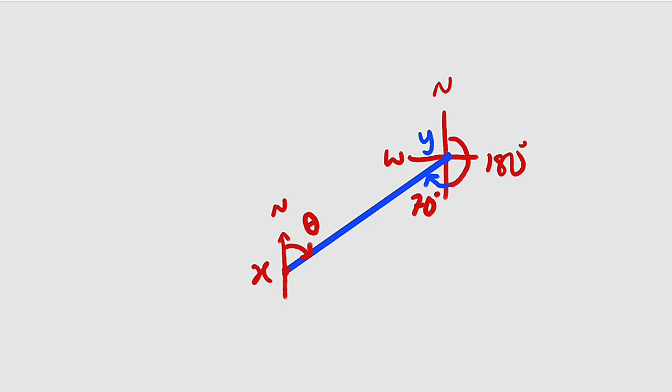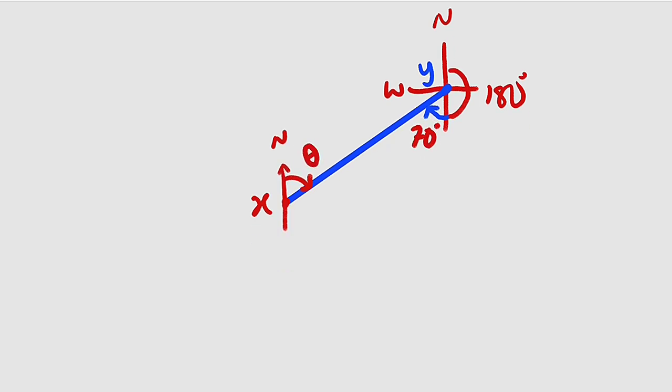Another thing you should know here is this: these lines are parallel and this is a transversal line. Therefore this theta and this 70 must be exactly the same because they are alternate angles. So we write theta is equal to 70 degrees. You can state the reason: alternate angles.